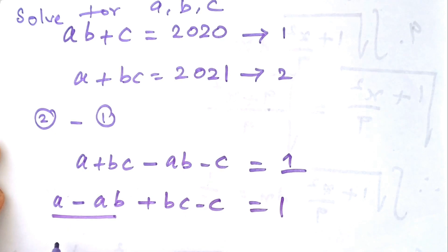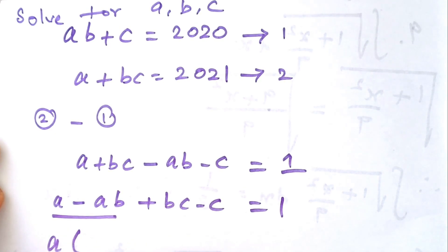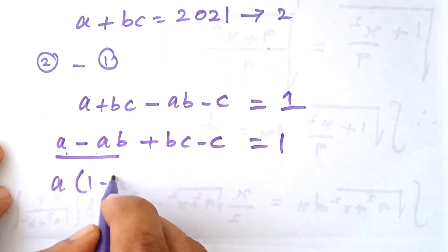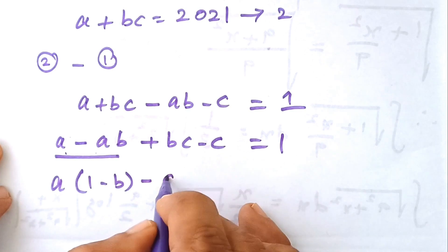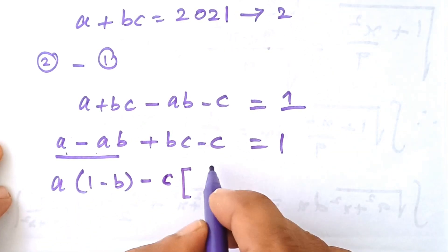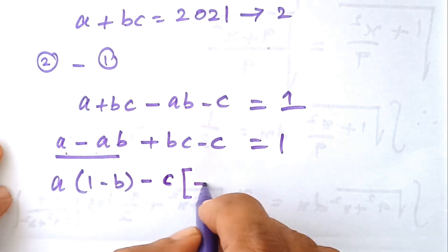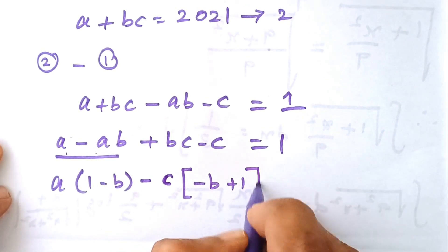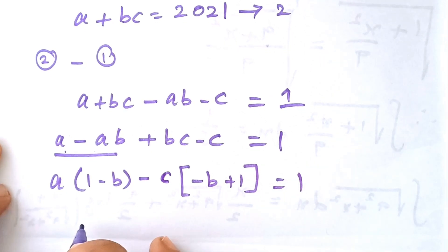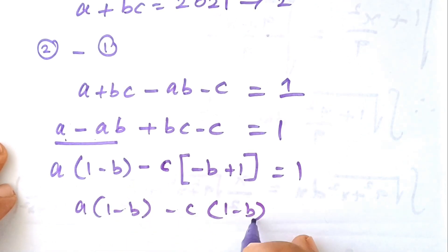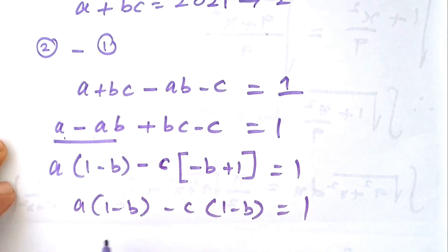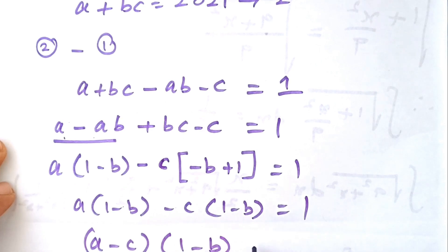From the first two terms I can take A as a common factor out. So A minus A·B can be written as A·(1 minus B). Then I am taking minus C as a common factor, giving minus C·(1 minus B). So the equation becomes: A·(1 minus B) minus C·(1 minus B) is equal to 1.